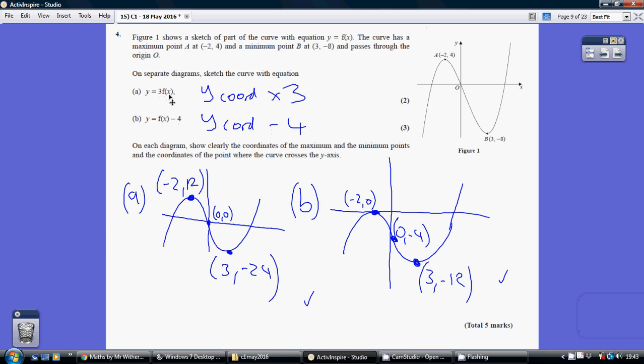We need to basically change all our key points by multiplying the y-coordinate by 3. So this is no longer going to be (-2, 4), but rather (-2, 12).